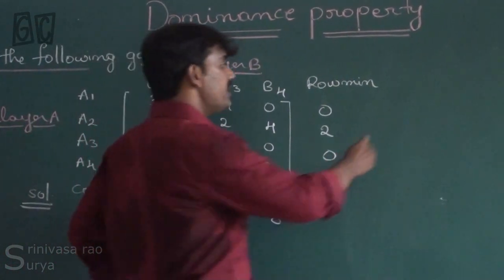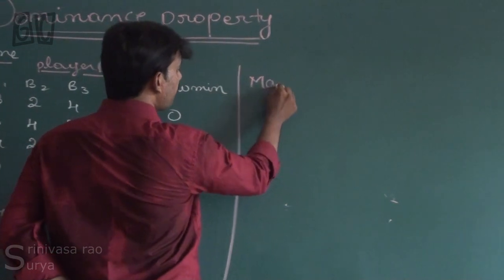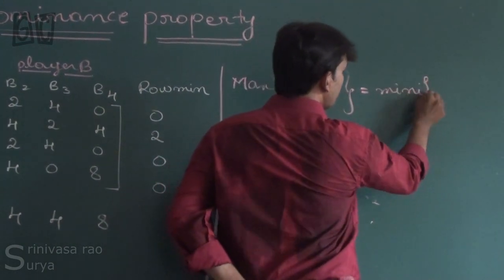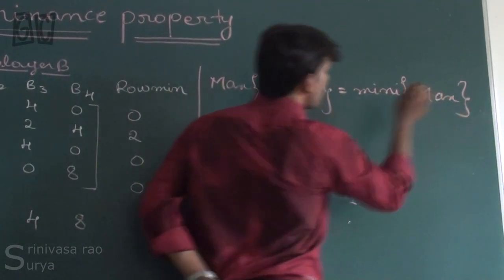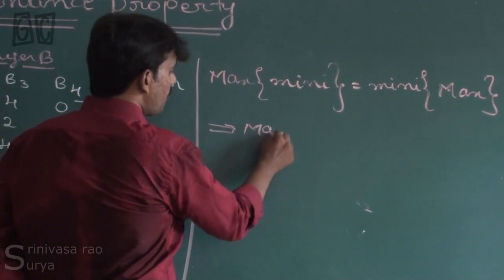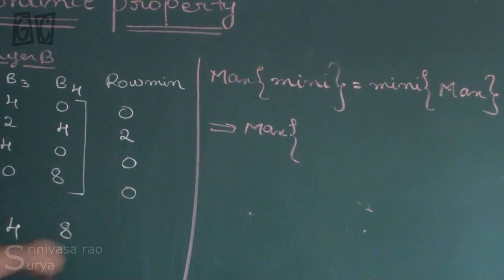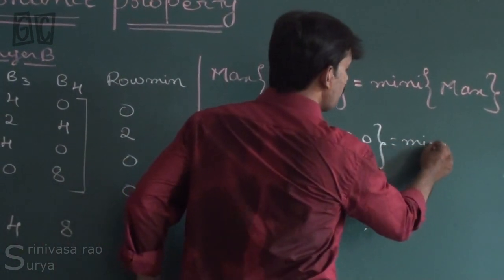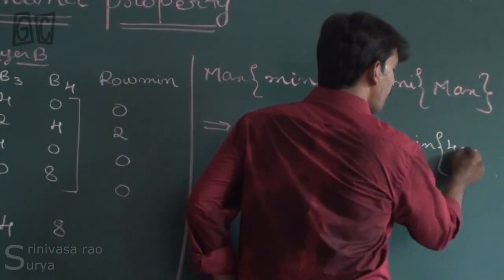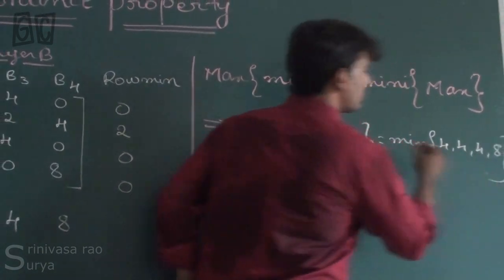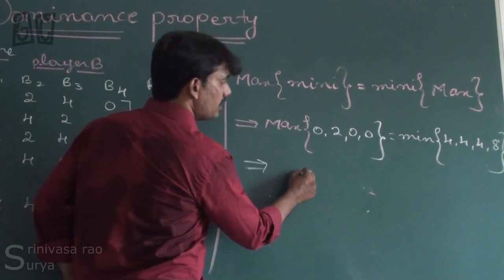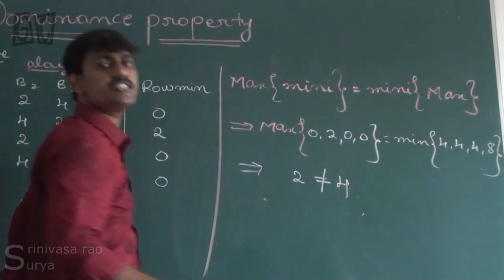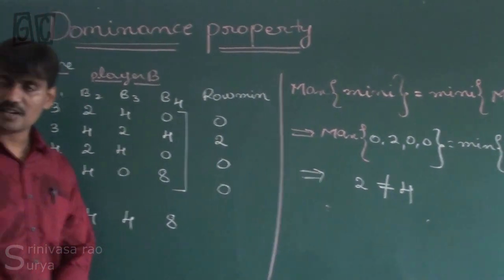We apply the maximin–minimax procedure: max of mini equals mini of max. The maximum of the row minimums (0, 0, 0) gives 2, and the minimum of the column maximums is 4. Since 2 is not equal to 4, the given game does not possess any saddle point.